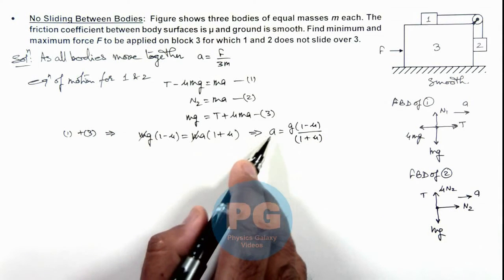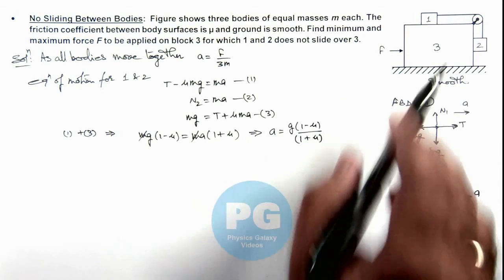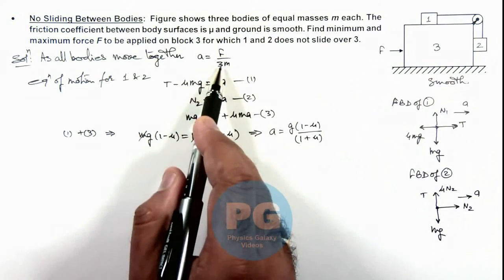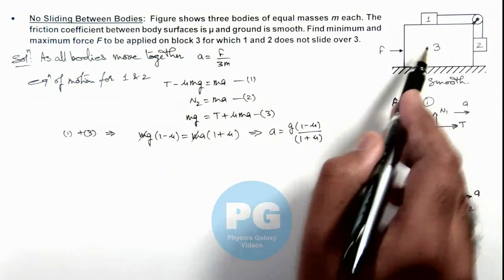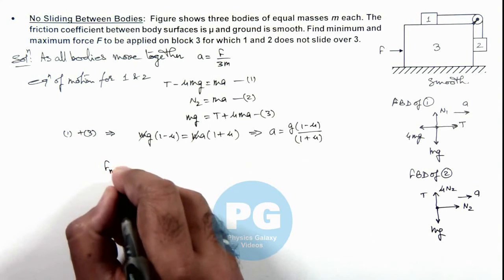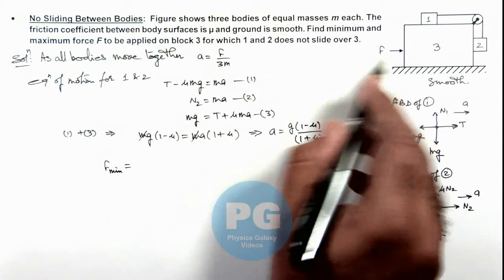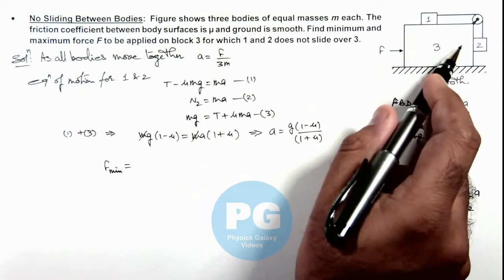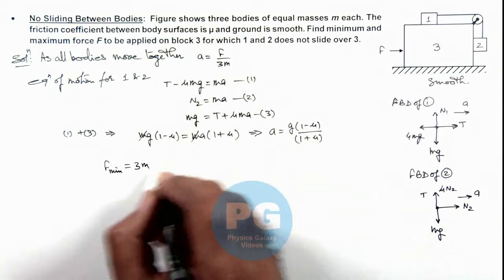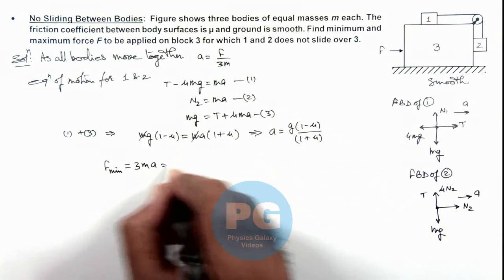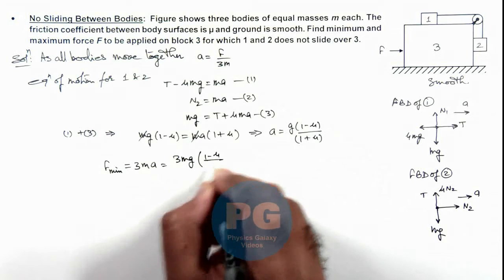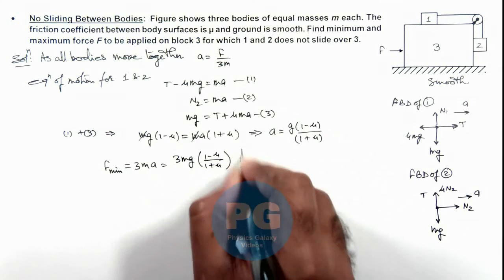This is the minimum acceleration required to keep bodies 1 and 2 moving with a common acceleration ay, or at rest with respect to block 3. The value of minimum force is therefore 3m times ay, which equals 3mg times (1 minus mu) divided by (1 plus mu). This is the first result of the problem.